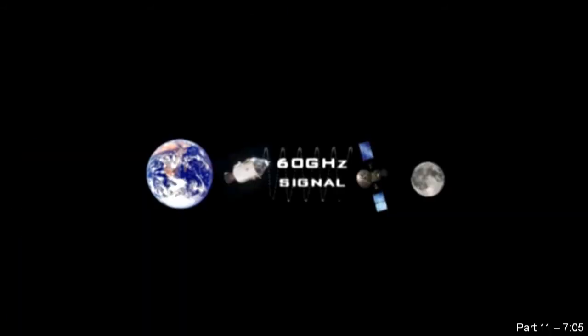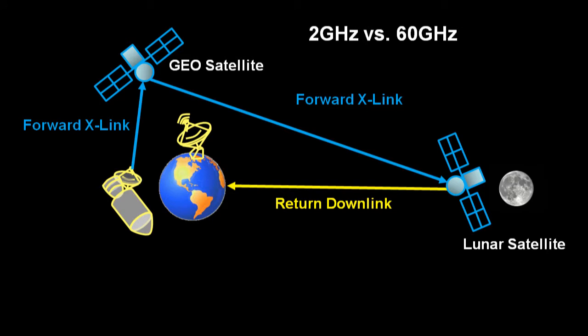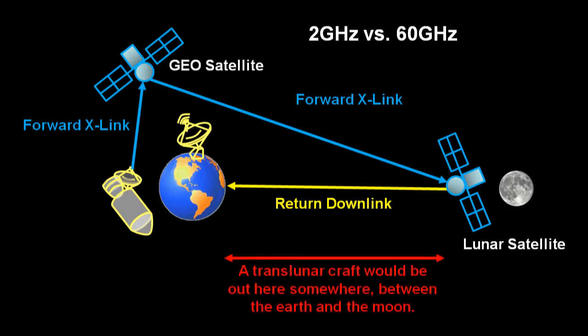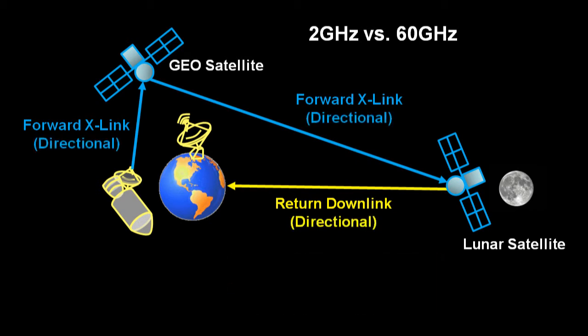Nevertheless, let's test Jarrah's theory that NASA used this frequency to bounce messages off an unmanned translunar spacecraft by playing "What Would I Do If I Were a Conspirator?" Well, whether you use 2 gigahertz or 60 gigahertz, it's a directional signal. If you have a satellite in Earth orbit and it transmits to a satellite in lunar orbit, it really wouldn't matter which frequency you use, because nobody on Earth would be able to intercept the directional signal.